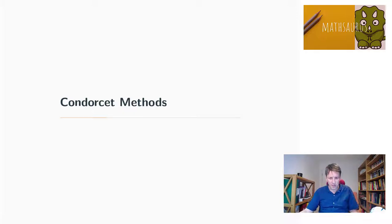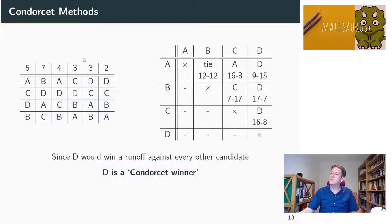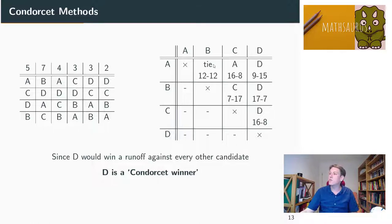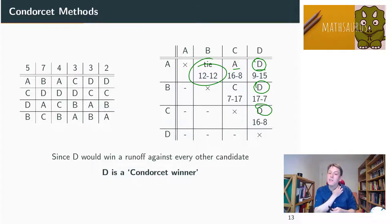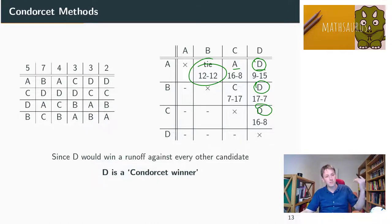Here's another way of looking at things — a Condorcet method. It takes the same preference table and creates pairwise runoffs between every pair of candidates. We've already seen that A vs B gives a tie, 12-all. Between A and C, A wins 16–8. Between A and D, D wins 15–9. When you analyse all candidates, D wins pairwise runoffs against every other candidate — voters prefer D to A, D to B, and D to C. That's what we mean by the Condorcet winner.